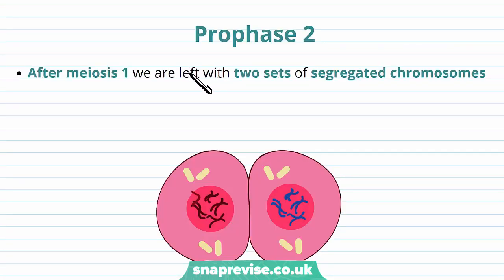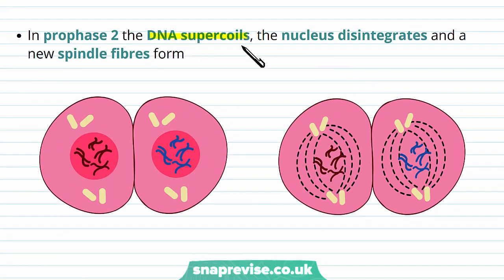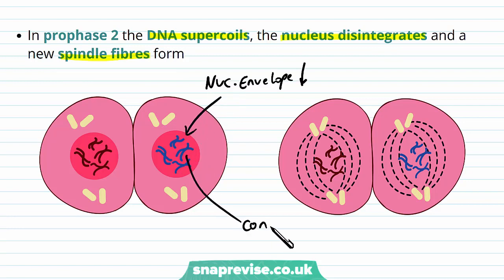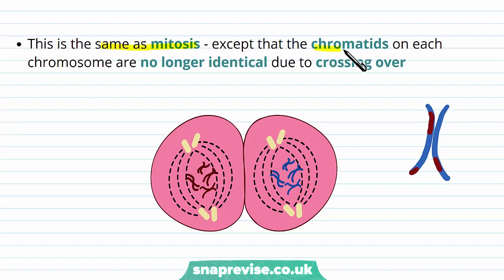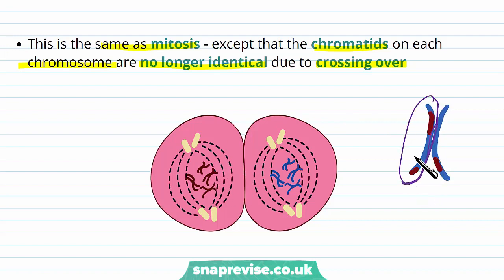After meiosis 1 has finished, we are left with two cells and two sets of segregated chromosomes, and now we need to go through the stages again — numbered meiosis 2. In prophase 2, the DNA supercoils again and becomes visible for each of the cells, the nuclear membrane disintegrates, and new spindle fibres form again — very similar to prophase 1. This is the same as mitosis, except that the chromatids on each chromosome are no longer identical because of crossing over. Each of the cells now has two chromosomes for every type of pair, but instead of being identical, the chromatids have exchanged genes with the copy that was with them earlier, so each chromatid will have slightly different alleles to the one next to it.